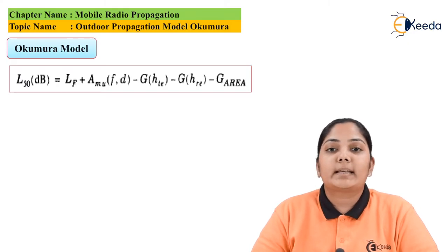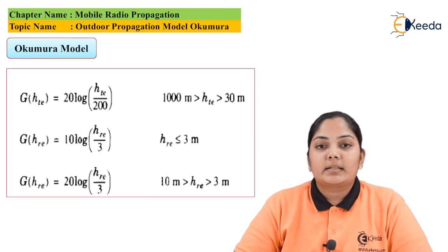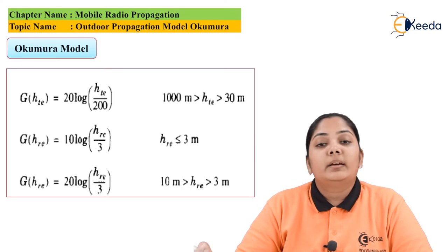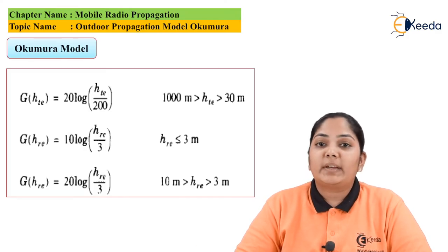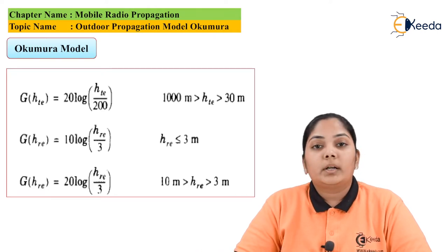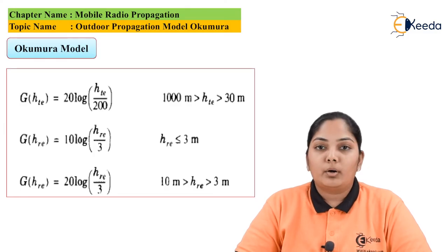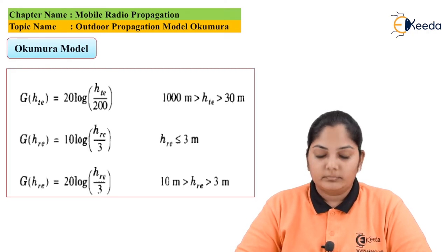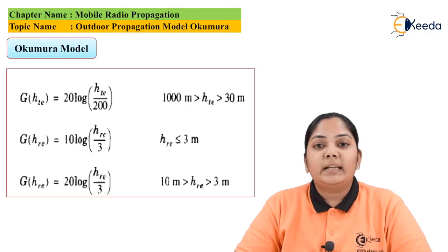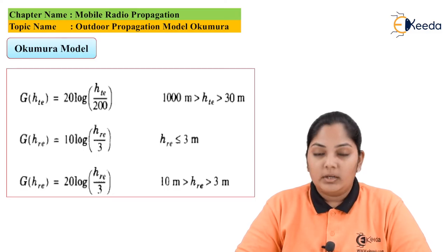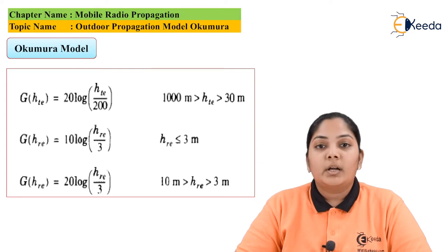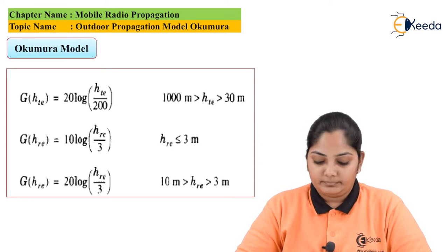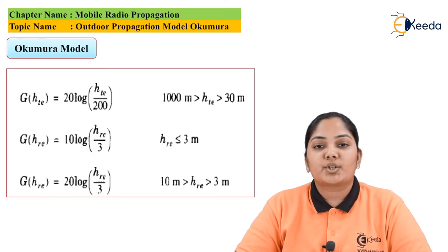Note that we have multiple area types — for example, suburban areas and open areas — so the correction factor G(area) changes accordingly. The antenna gain G(HTE) is strictly a function of antenna height. For antenna heights between 30 m and 1000 m: G(HTE) = 20 log(HTE / 200). For receiving antenna height less than 3 m: G(HRE) = 10 log(HRE / 3). For receiving antenna height between 3 m and 10 m: G(HRE) = 20 log(HRE / 3).